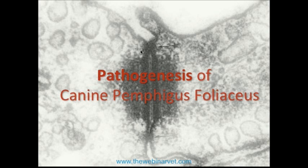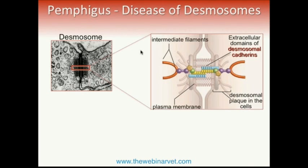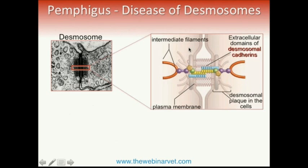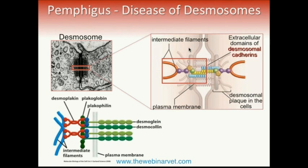Before talking about more clinical aspects, let's look at the molecular aspect of this disease and its pathogenesis, which is where my research is currently focused. Pemphigus is a disease of desmosomes — small structures responsible for cell-cell adhesion that work like a zipper or Velcro, holding keratinocytes together. From a molecular point of view, they are very complex structures composed of several proteins. Some are localized inside the cell, forming what we call a plaque — desmoplakin, plakoglobin, and plakophilin.